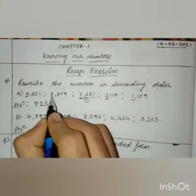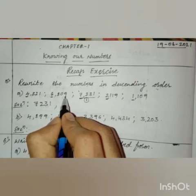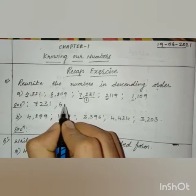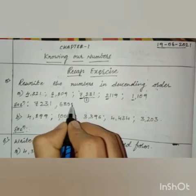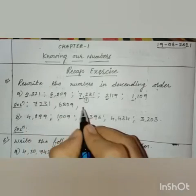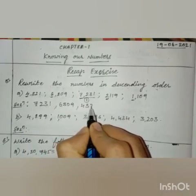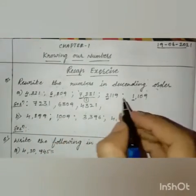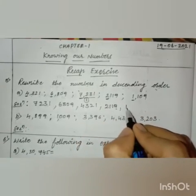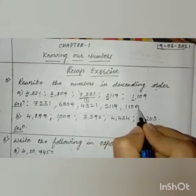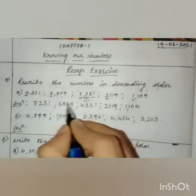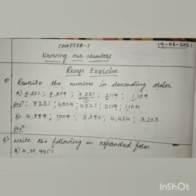Next comes 6,809 — that is the second greatest number. Then the next number is 4,321, and the next number is 2,119. The last number is 1,109. So this is the descending order of the given numbers.